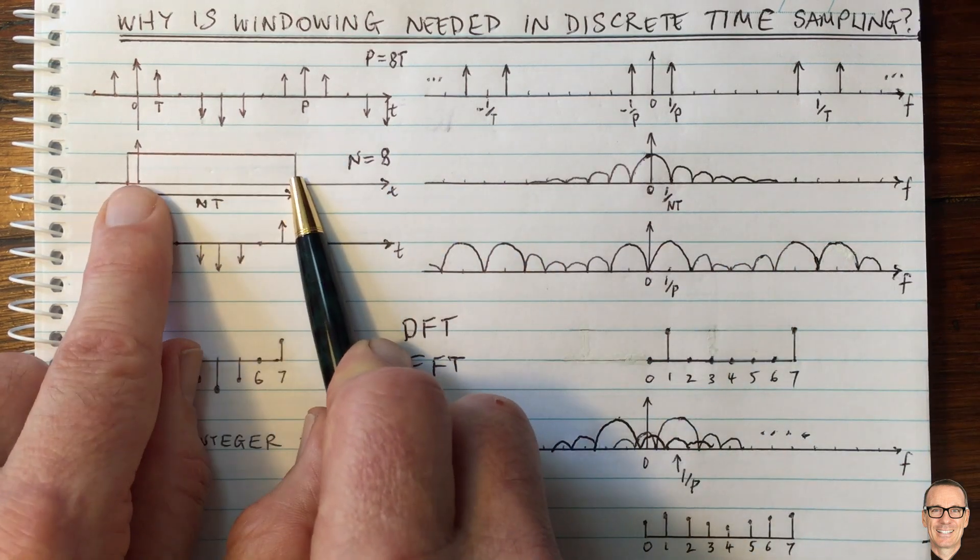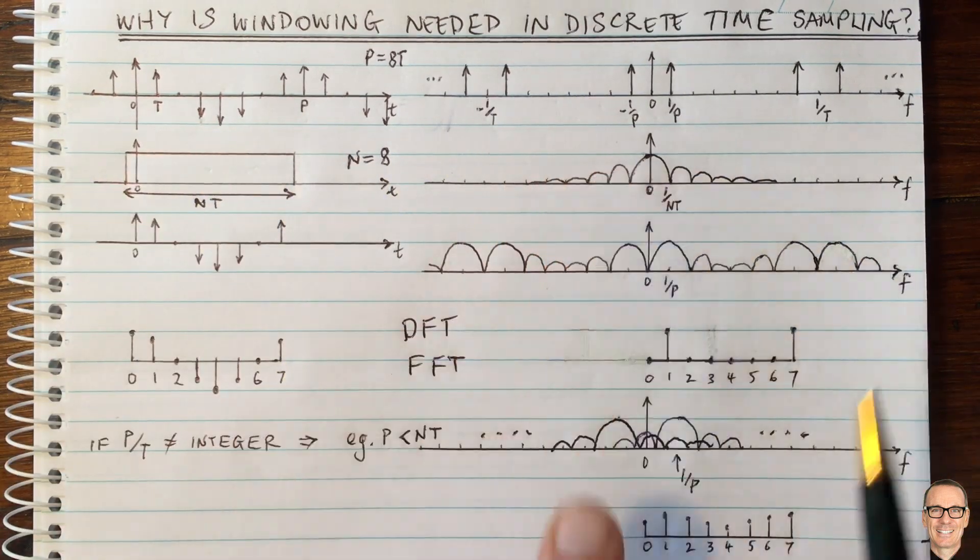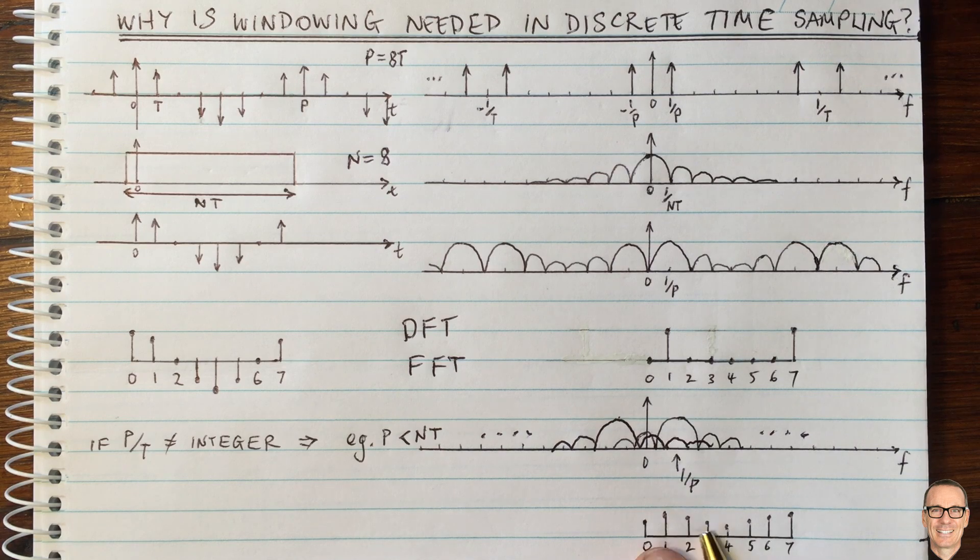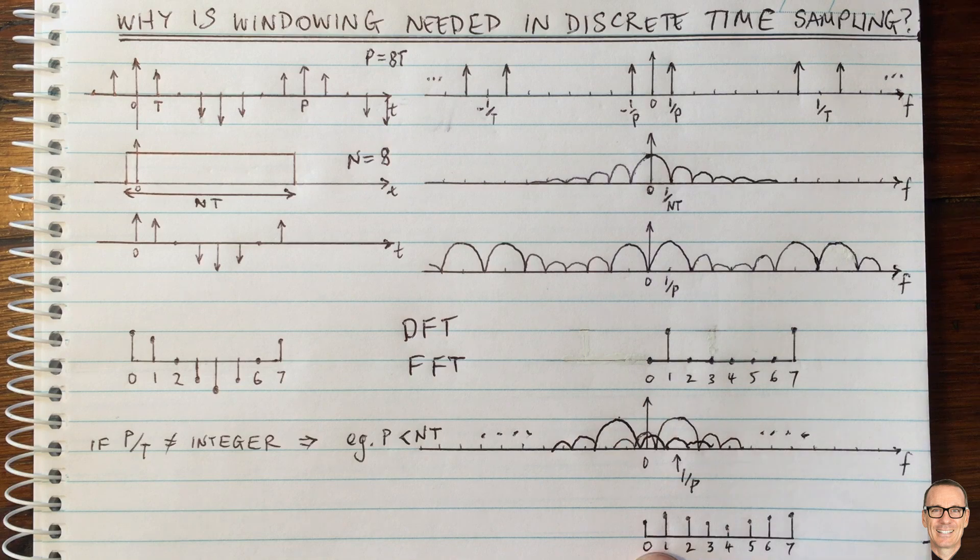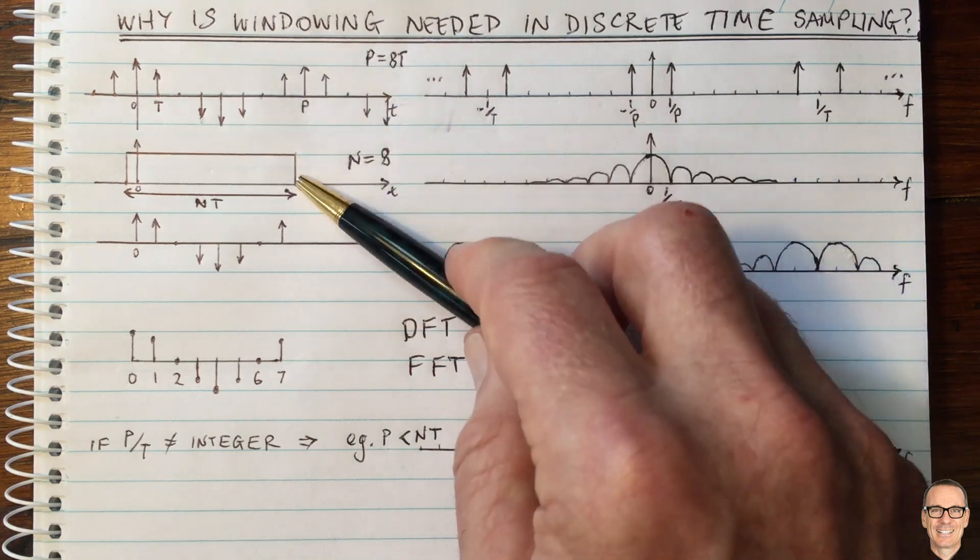If you took this function to be wider, then this would be narrower and you would have a bigger fall off in these values. So that means there's a benefit to measuring for a longer period of time if you can, if your signal allows you to.